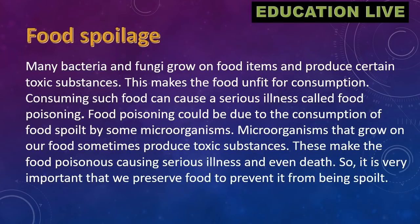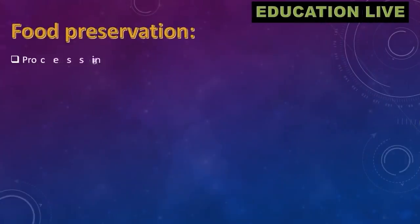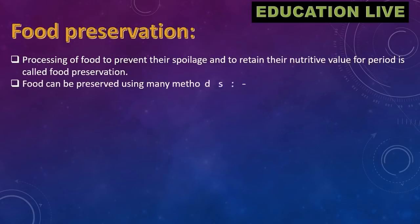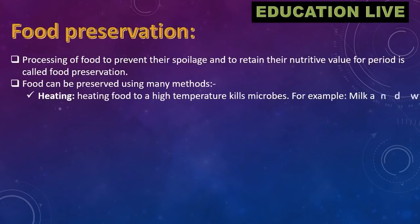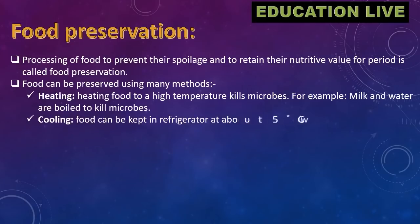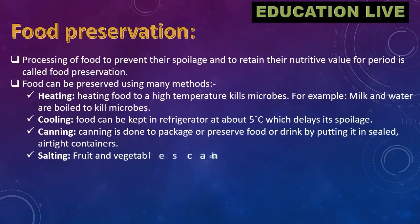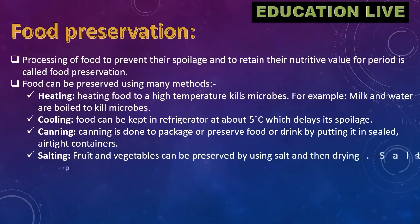It is very important that we preserve food to prevent it from being spoiled. Food preservation is the processing of food to prevent spoilage and retain nutritive value over a period of time. Food can be preserved by heating — heating food to a high temperature kills microbes, for example, milk and water are boiled. Cooling food in a refrigerator at about 5°C delays its spoilage.